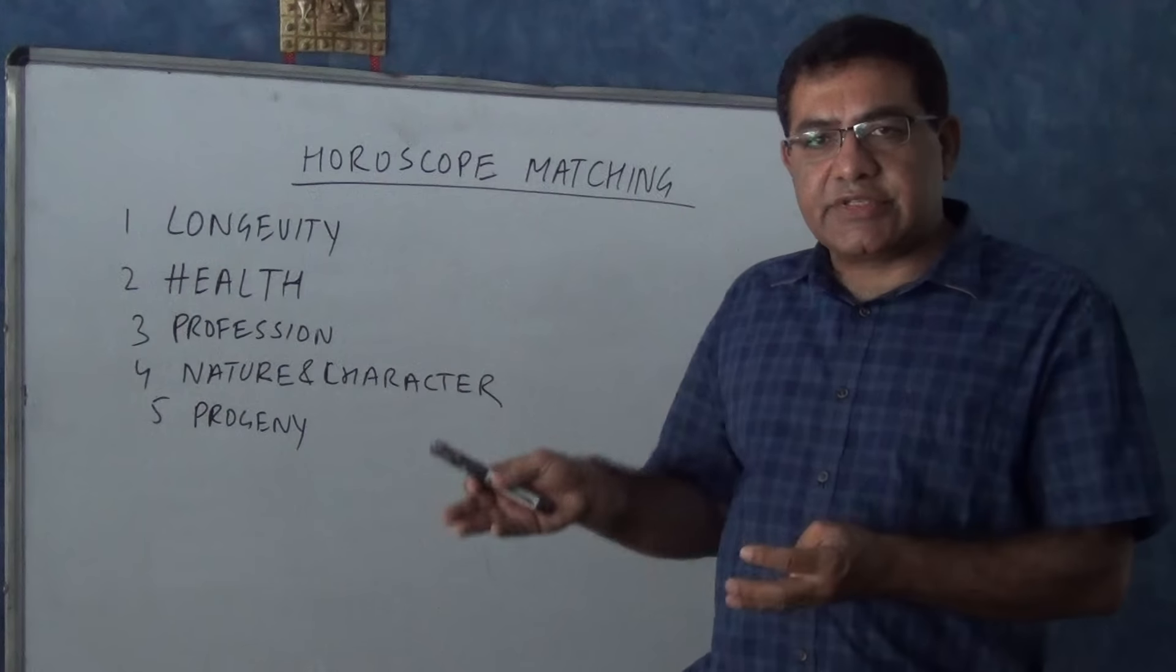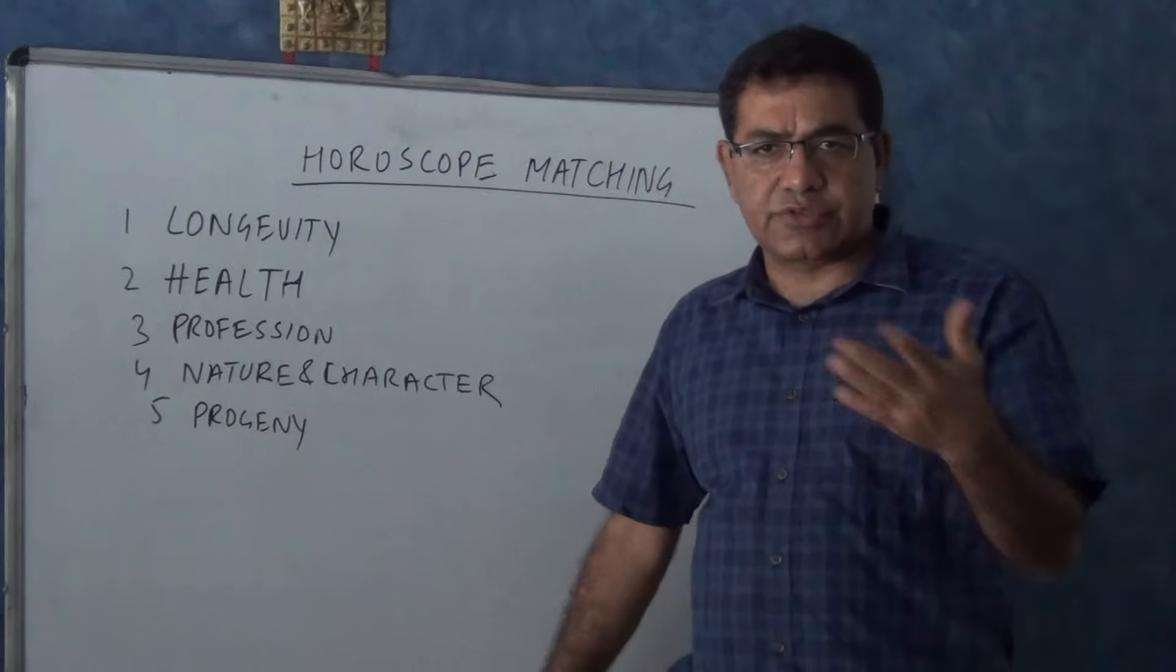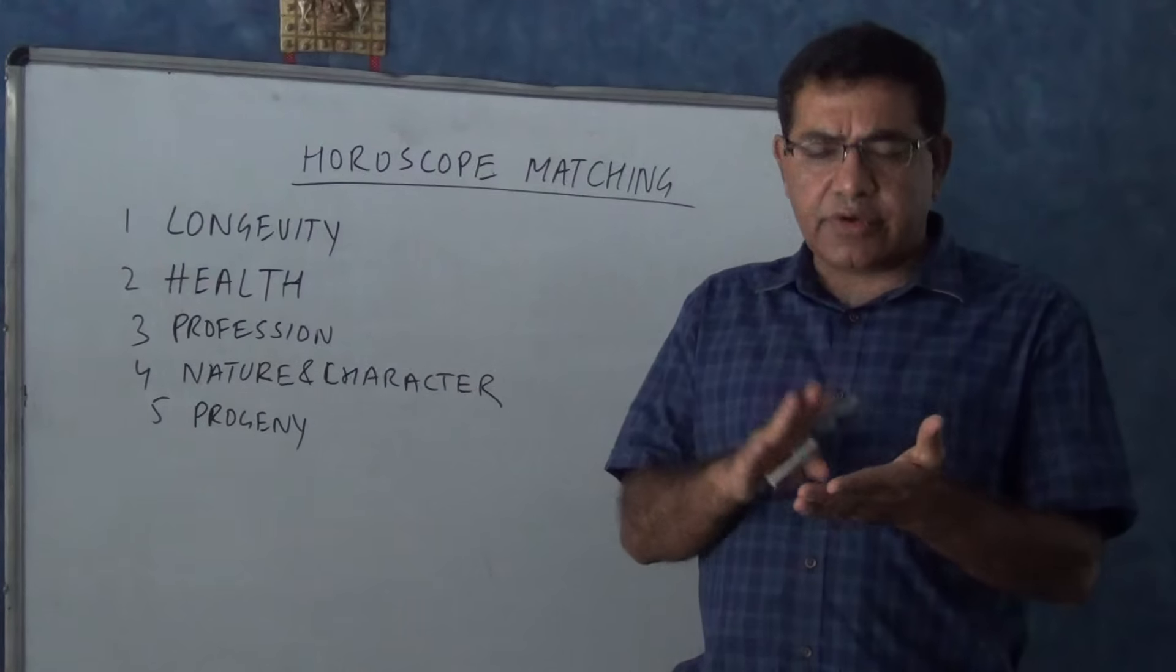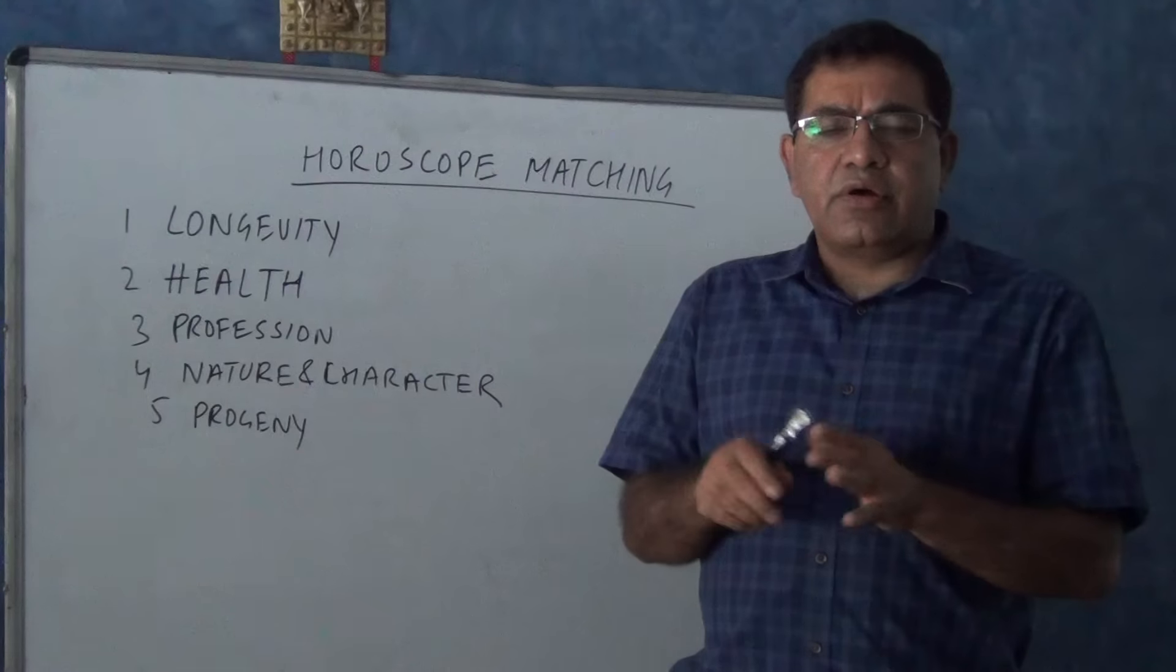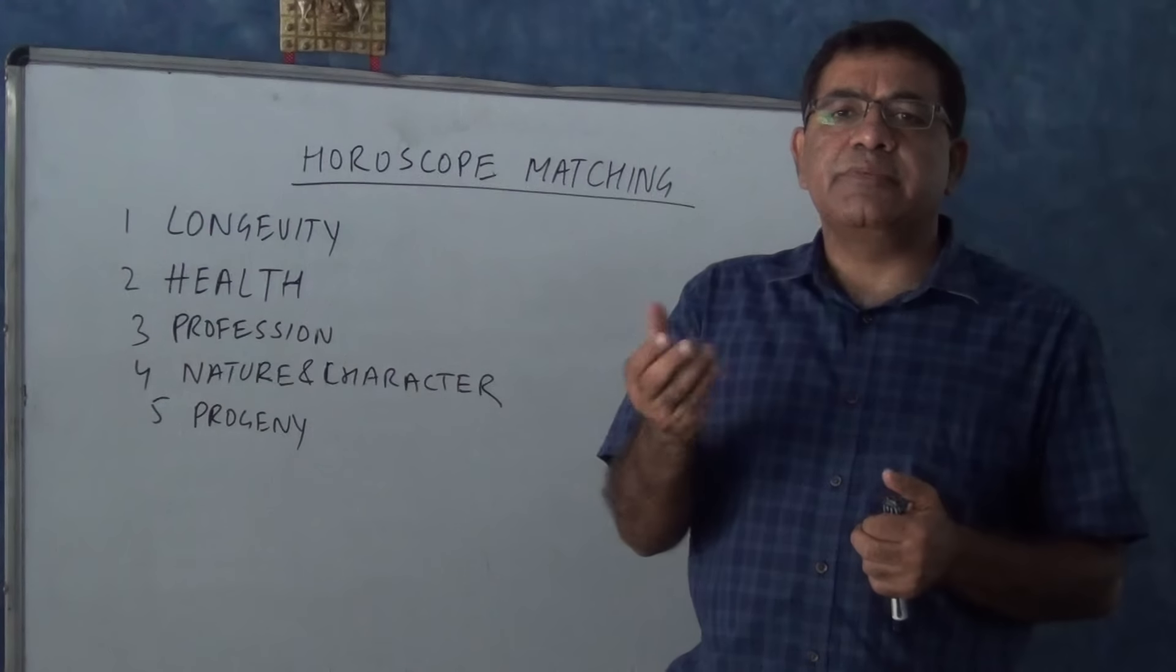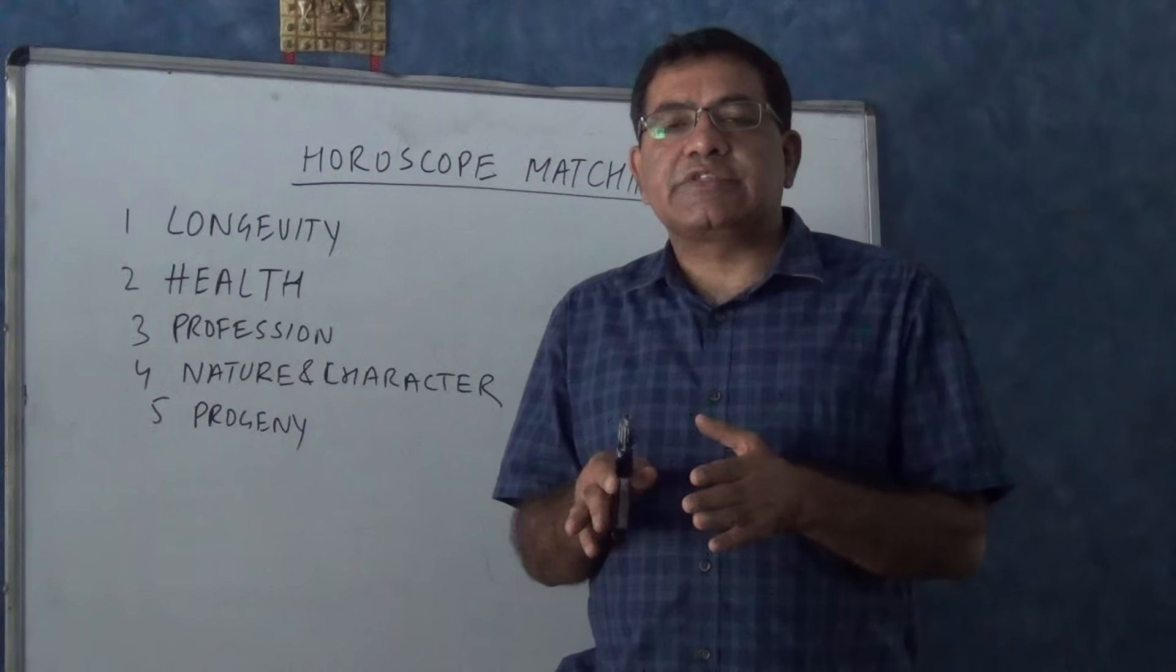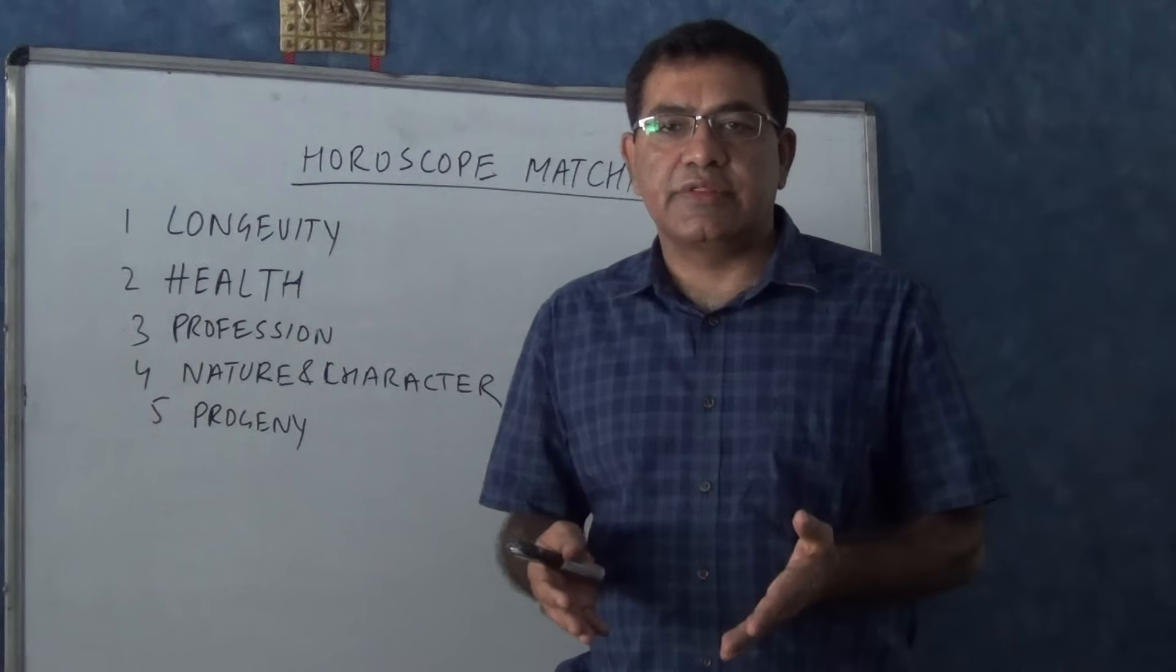All the planets cannot be positive in all senses. If on or around 60 to 70% the horoscope is okay, we can pass that. And that is all what we have to see in the horoscope matching. We do not have to see any other thing, like Ashtakoot-Milan and all. Because in case of Ashtakoot-Milan, they see only the nakshatra of moon and the sign of moon. That means moon only. In this case we are seeing all the nine planets. So this is how we have to match the horoscopes when we want to get our daughter or son or brother or sister married. Thank you very much.